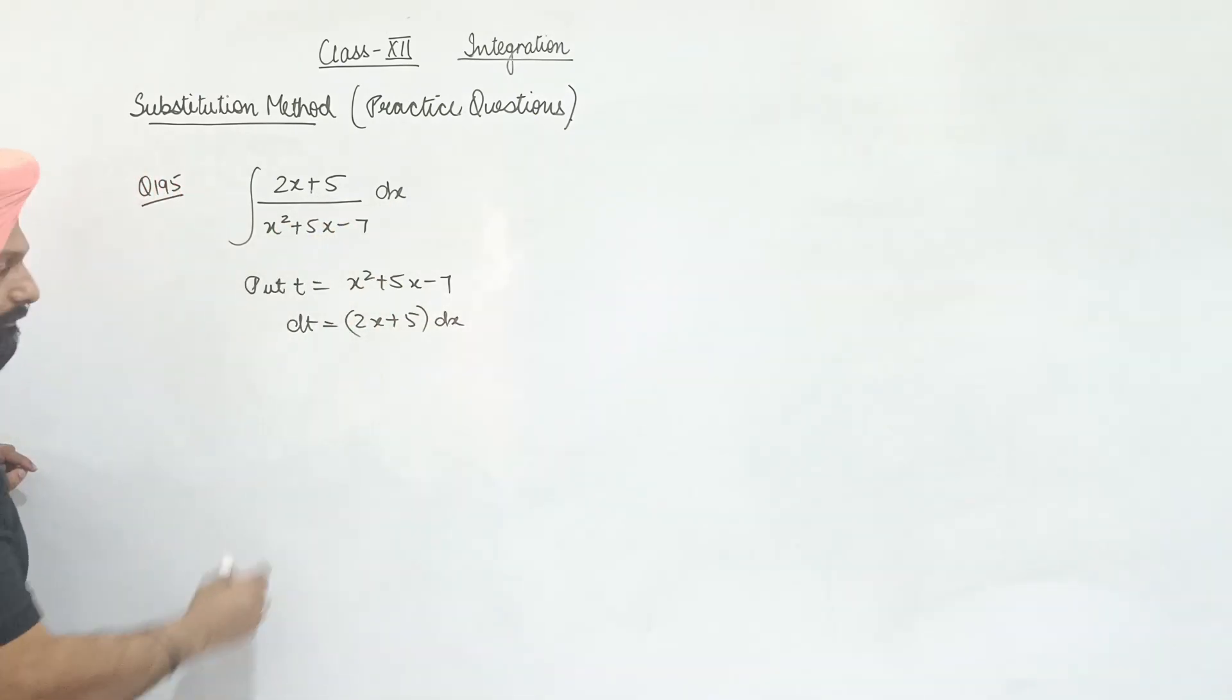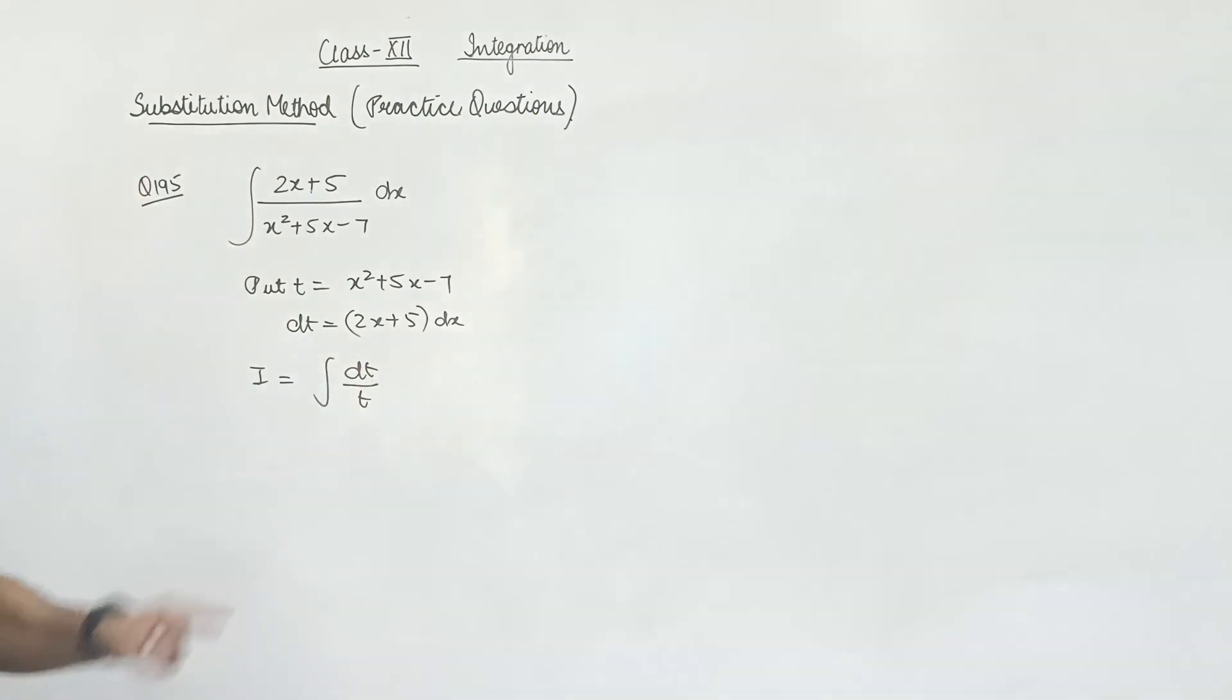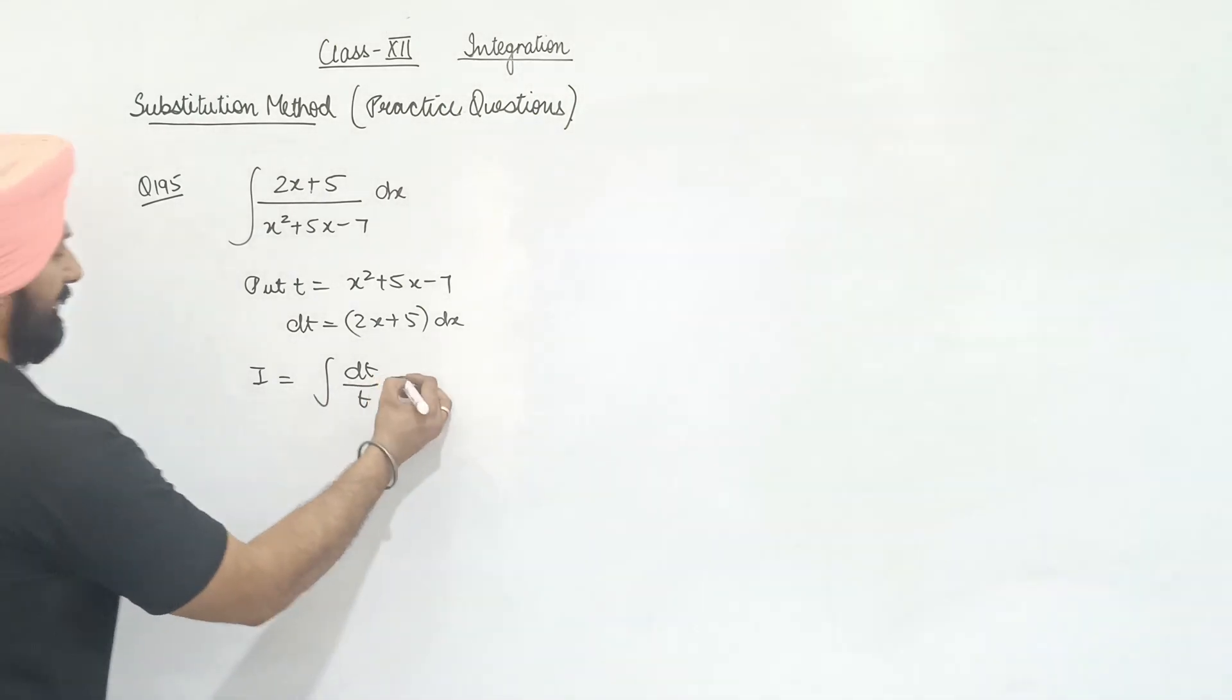What does it become dt? So what does my integral become? dt upon t, which is the second type. dt upon t. What is the answer? ln t, ln t.